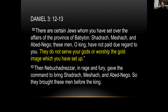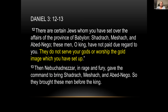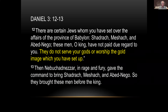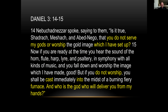Daniel 3:12-13: 'There are certain Jews whom you have set over the affairs of the province of Babylon — Shadrach, Meshach, and Abednego. These men, O king, have not paid due regard to you. They do not serve your gods or worship the gold image which you have set up.' Then Nebuchadnezzar in rage and fury gave the command to bring Shadrach, Meshach, and Abednego — he's not used to people not doing what he says — so they brought these men before the king.